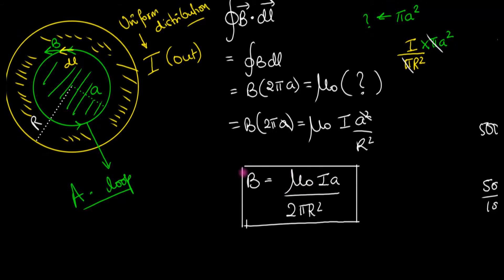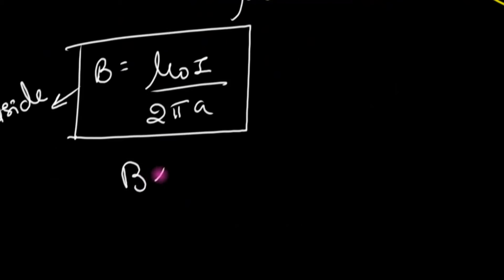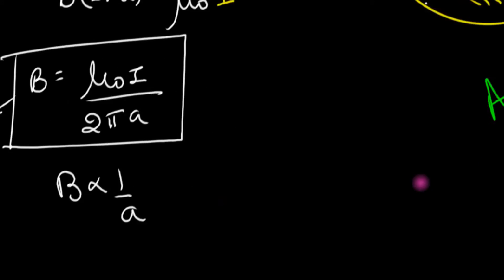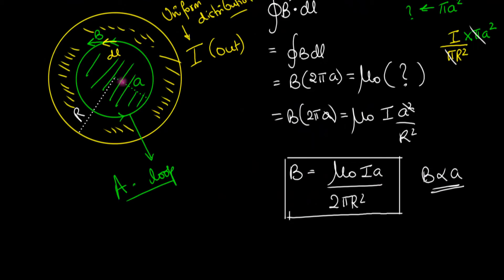Let's analyze this equation. Inside the wire, you can see that the magnetic field is proportional to A. Whereas when you go outside, the magnetic field is inversely proportional to A. Why is that? Well, notice that as the radius increases — as you go farther and farther from the center — you are enclosing more and more current, and because of that you end up having a stronger magnetic field. But once you are outside, you're no longer enclosing more current — you're already enclosing the maximum current, so as you go farther away, the magnetic field decreases.